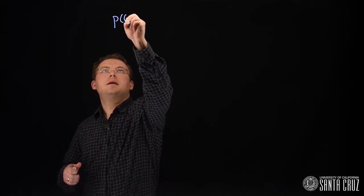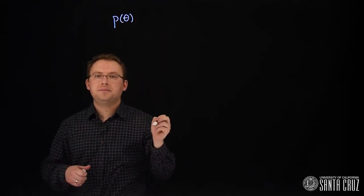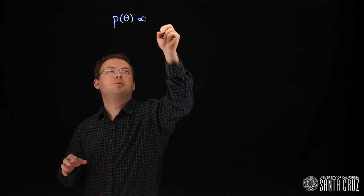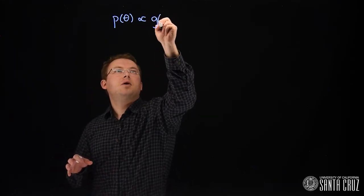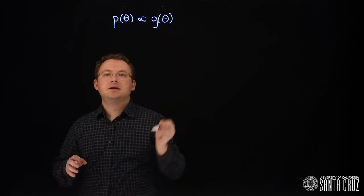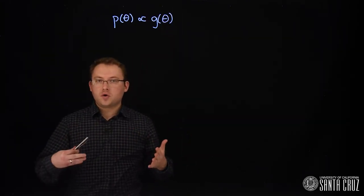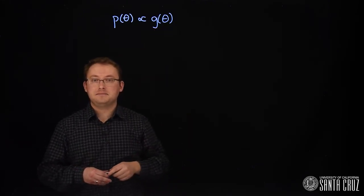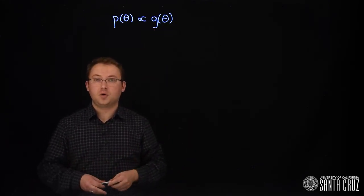Let's say we want to produce samples from a target distribution. We're going to call it p of theta, but we only know it up to a normalizing constant or up to proportionality. What we have is g of theta. We don't know the normalizing constant because perhaps this is difficult to integrate. So we only have g of theta to work with.